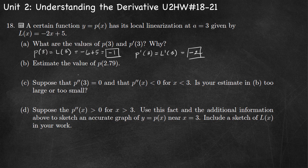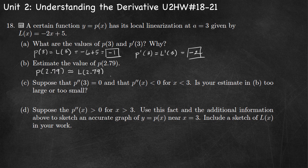Part B: estimate the value of p of 2.79. We can estimate p of 2.79 using our local linearization, so p of 2.79 is approximately equal to L of 2.79. p of x and L of x are exactly equal at the point of tangency, but as we move away, L of x only approximates p of x. Substituting 2.79 into the equation for L of x gives negative 0.58.